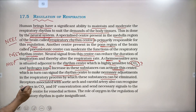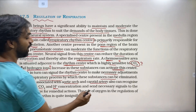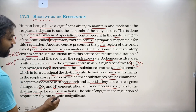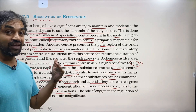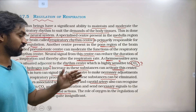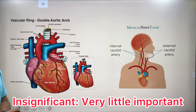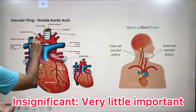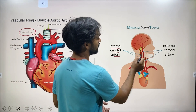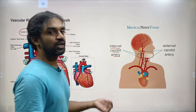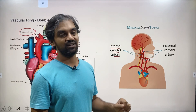The chemosensitive area, once activated by increased CO₂ and hydrogen ions, signals the respiratory rhythm center to make necessary adjustments in the respiratory process so that these substances can be eliminated. Additionally, receptors associated with the aortic arch and carotid artery can also recognize changes in CO₂ and hydrogen ion concentration and send necessary signals to the rhythm center for remedial action. The role of oxygen in regulating respiratory rhythm is quite insignificant.